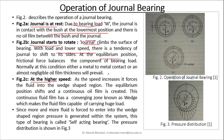At this condition, either metal to metal contact or an almost negligible oil film thickness will prevail. As the speed increases, it forces the fluid into the wedge-shaped region. The equilibrium position shifts and a continuous oil film is created. This continuous fluid film has a converging zone known as the wedge, which makes the fluid film capable of carrying a huge load. Since more and more fluid is forced into the wedge-shaped region, pressure is generated within the system, and this type of bearing is called a self-acting bearing. The pressure distribution is shown in figure 3.